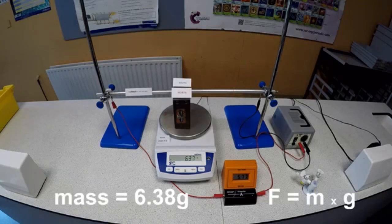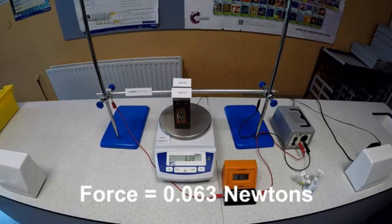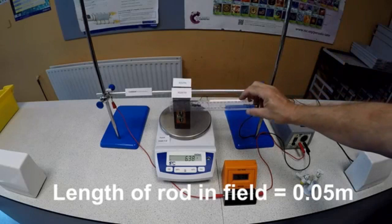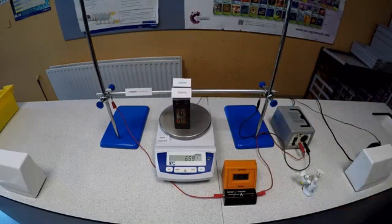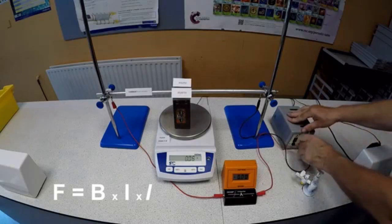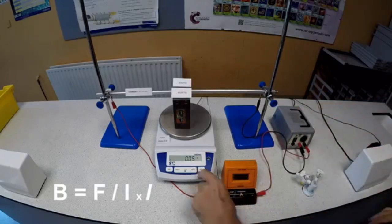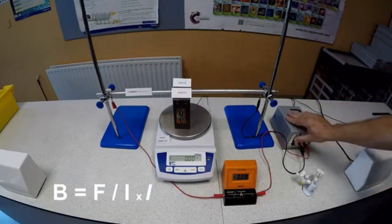So using Newton's third law, action and reaction are equal and opposite, the magnet is pushed down. Reading the mass off the balance and multiplying by G, you can find the force being applied. Now you need to read the length of the rod actually in the magnetic field. Converting everything to SI units, that's grams to kilograms, centimeters to meters, and using the form F equals BIL, or rearranging the form F equals BIL, you can calculate the value of the magnetic field strength.